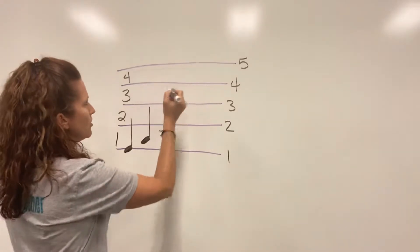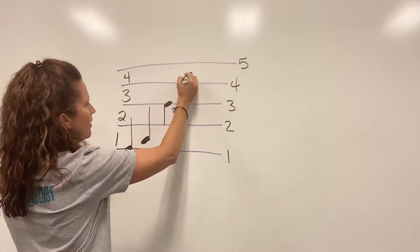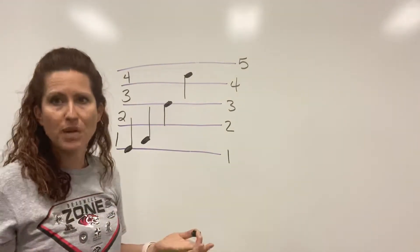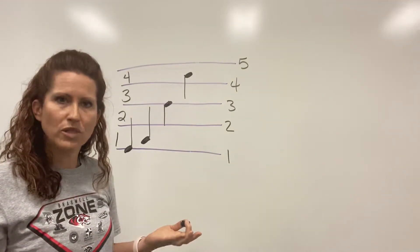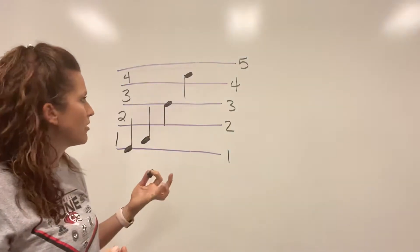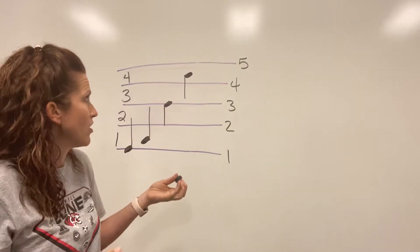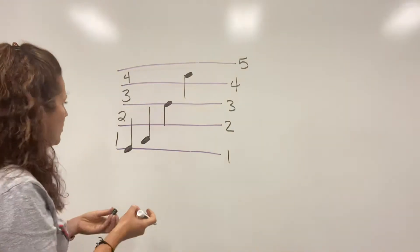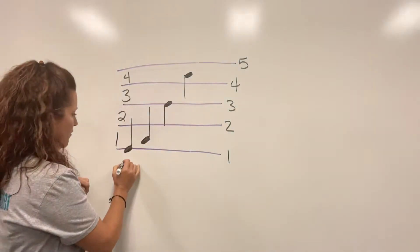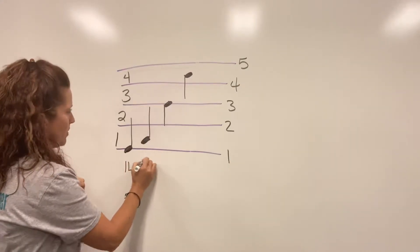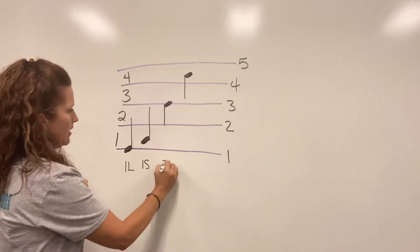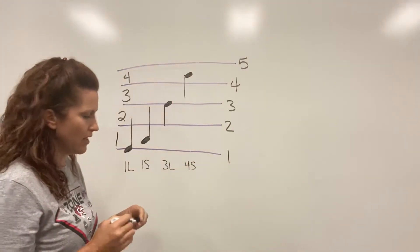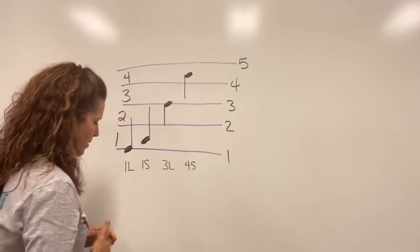If I drew here, my stem's gonna go down. That would be the fourth space. So in your assignment that you're going to do, you're going to literally write if it's on the fourth, like what number, line or space it's on. So this would be first line, first space, third line, fourth space. Does that make sense? So you're just putting the number on it and if it's a line or a space.